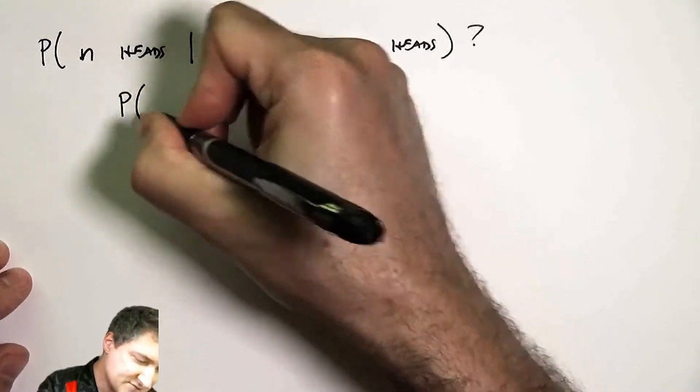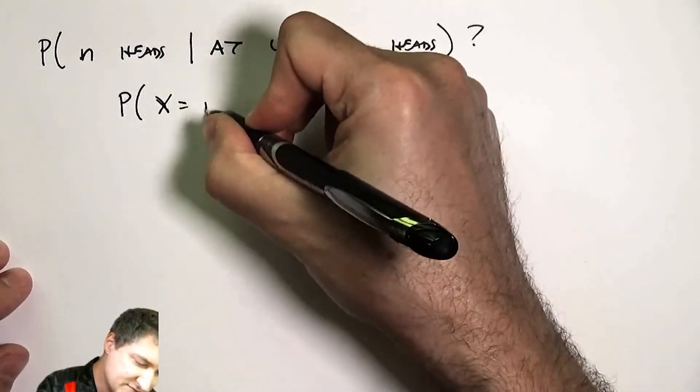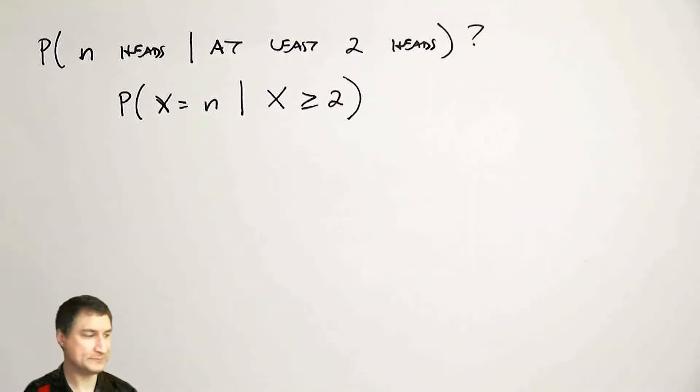Or a more mathy way of saying this is: I want to know what is the probability that the random variable equals n, given that I know the random variable was at least equal to two.